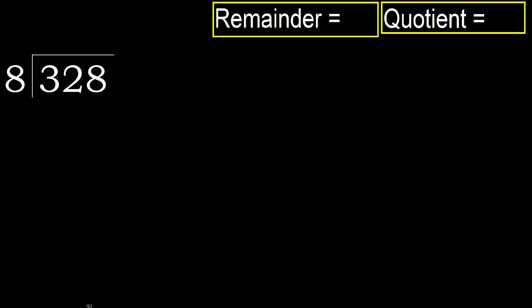328 divided by 8. 3 is less, therefore next. 32 is not less, therefore with 32. 8 multiply by which number is nearest to 32,